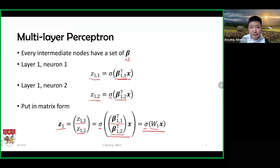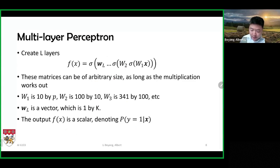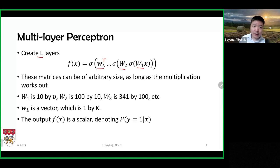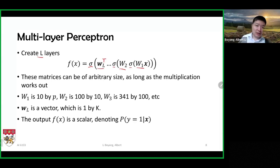We can have as many layers as we want. For L layers, each layer is parameterized by a matrix: W1 for the first layer, W2 for the second, up to WL for the last layer, which is a row vector. After multiplication we get a scalar, which goes through an activation function. There could be multiple nonlinear activation functions at each layer, and that's typically how these networks are designed.